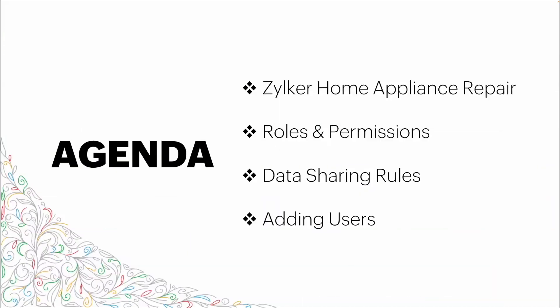Our agenda for this video: first we're going to take a look at our example company, in this case Zilker Home Appliance Repair. We're going to look at the hierarchy of the company, discuss the roles and their level of access. We'll then look at a few different features that can also affect that structure, and lastly we will do a quick view of adding users.